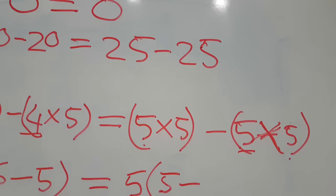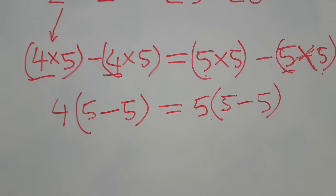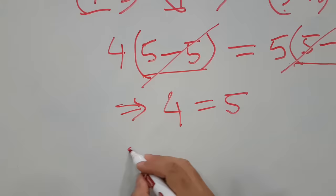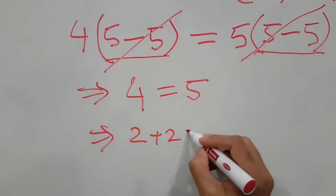Now you can see that from the left-hand side we have 5 minus 5, and from the right-hand side we also have 5 minus 5 — they are the same. So I can eliminate both of them from each side. What remains on the left-hand side is 4, and on the right-hand side is 5. Since 2 plus 2 equals 4, I can say 2 plus 2 is equal to 5.